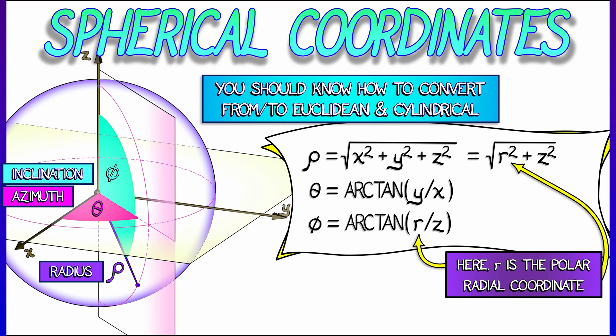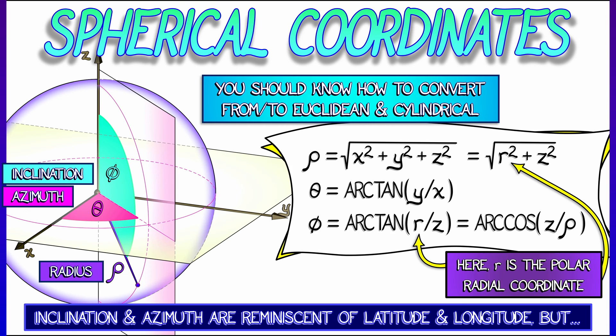Phi, now, is arctan of r over z, or if you like, arccosine of z over rho. Now, that's a lot of formulae. I don't always remember that.